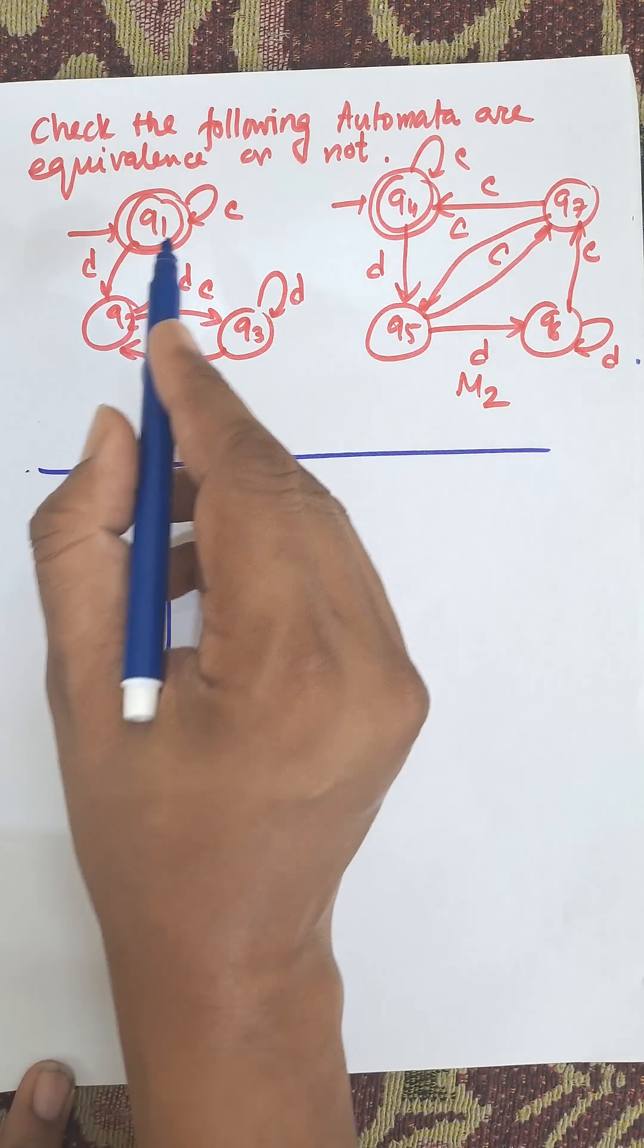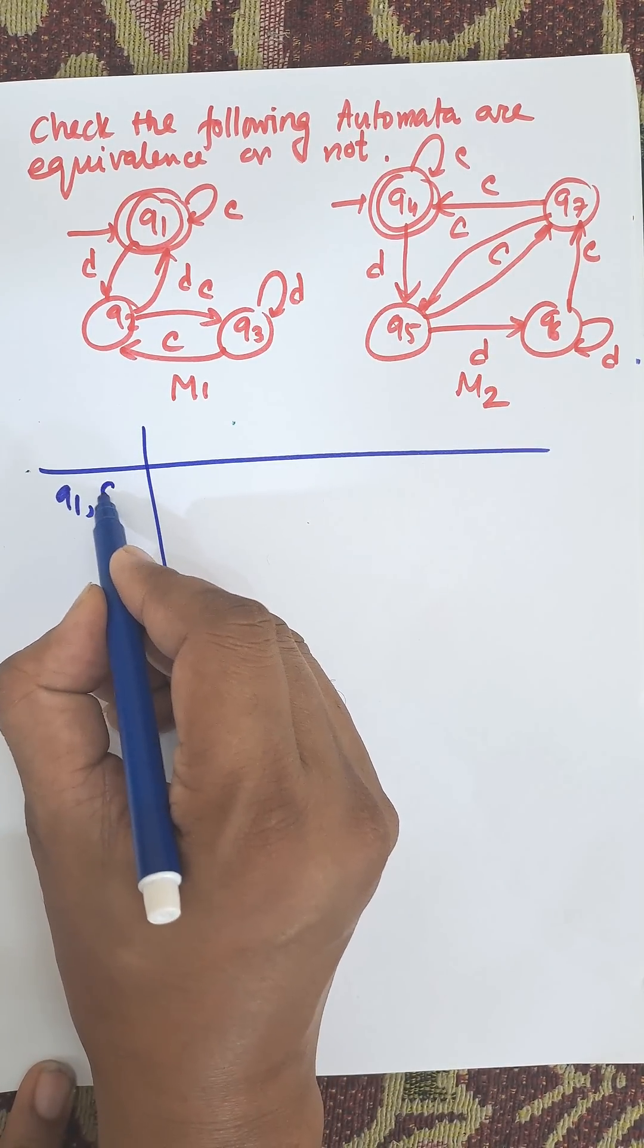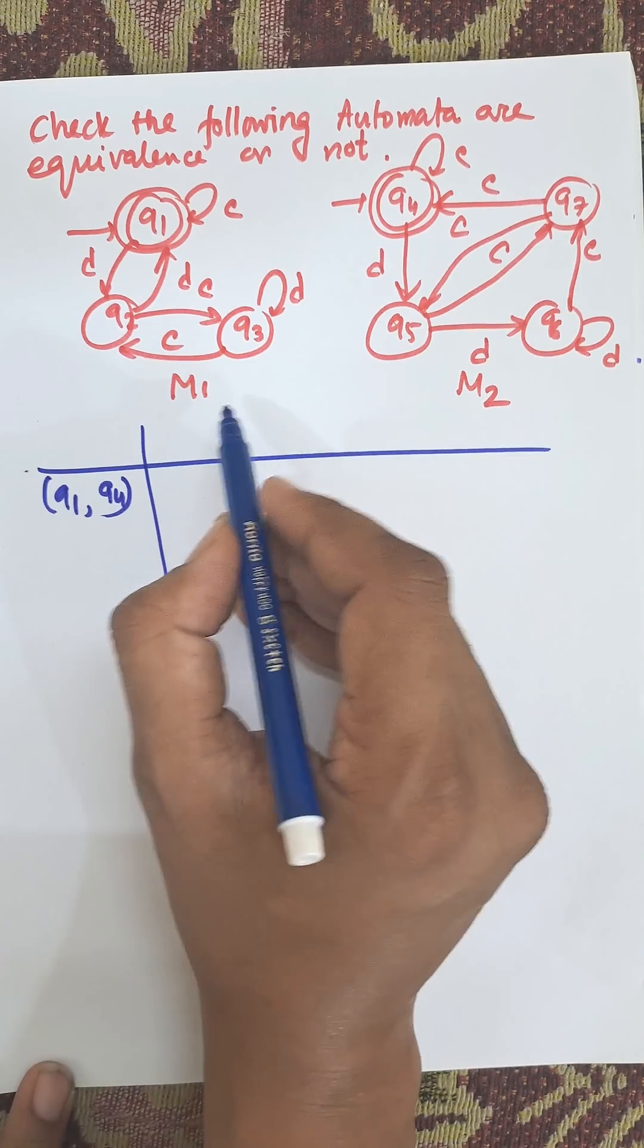This is the initial state of machine M1, Q1, and the initial state of machine M2 is Q4.